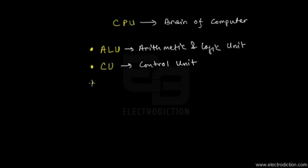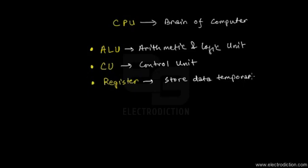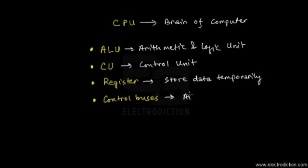The CPU also contains registers — data storage devices which temporarily store data while it is being processed by the CPU. Then we also have control buses, which are control lines emerging from each and every part of the CPU. These basically aid data transfer between each and every component of the CPU.